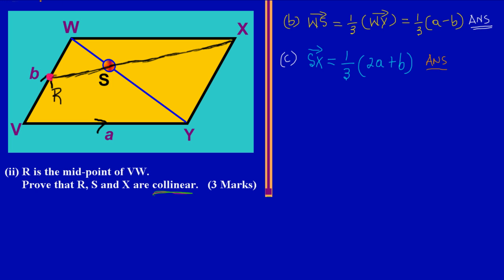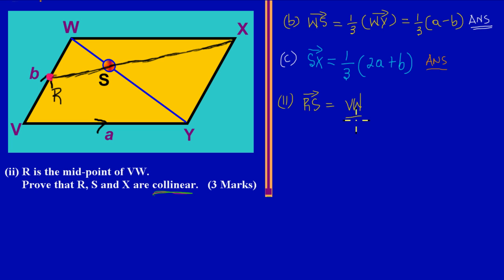In part two, first I must find my distance R to S. R to S equals, since R is the midpoint, R to W would really be V to W divided by two — because it is halfway the distance of VW. And then I'm adding to that W to S. So the distance RS is expressed as that sum.